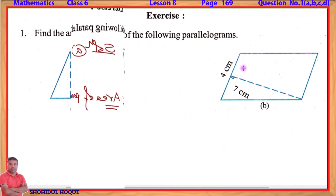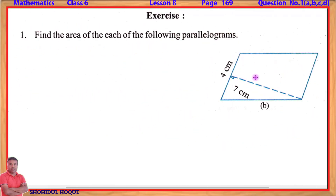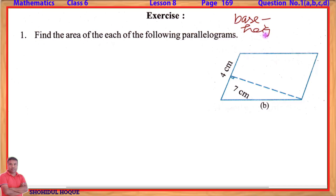Now moving to part B. To find the area of a parallelogram, we need two things: the base and the height. Both components are needed to calculate the area.